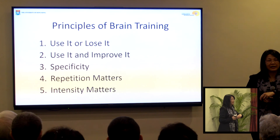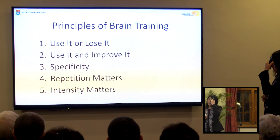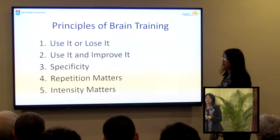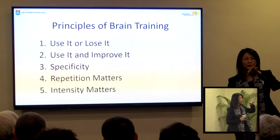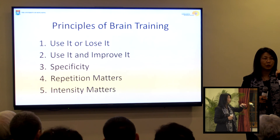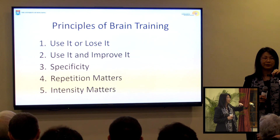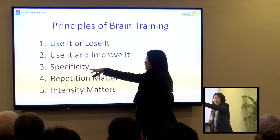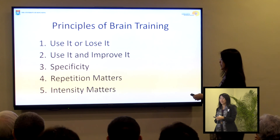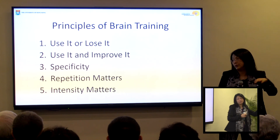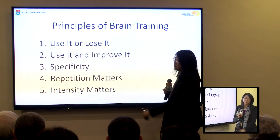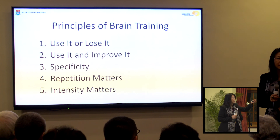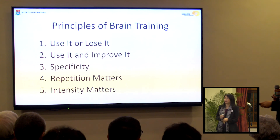To sum up: for brain function and brain health, one very important principle is 'if you don't use it, you lose it.' When there's a new experience, connections form. But if you don't repeat it to a significant extent, that connection will be gone. If you use it, you'll improve it. Specific experiences bring about specific changes, and repetition at a certain intensity is very important to build the strength of connections so that the whole trait and representation fires actively, enabling new experiences and new skills.